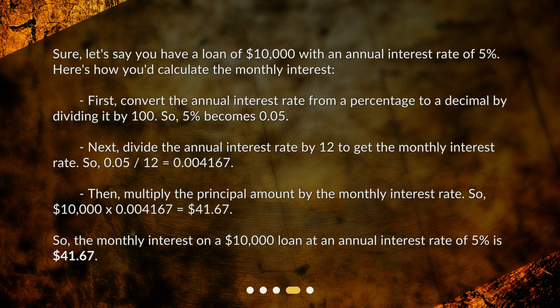So the monthly interest on a $10,000 loan at an annual interest rate of 5% is $41.67.